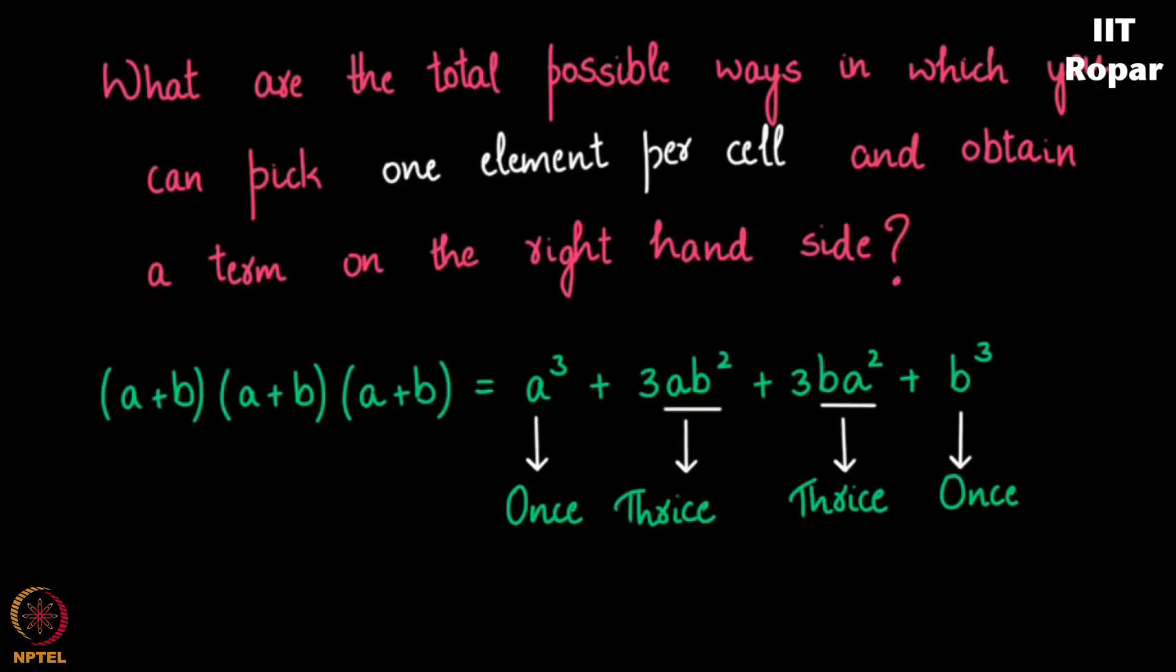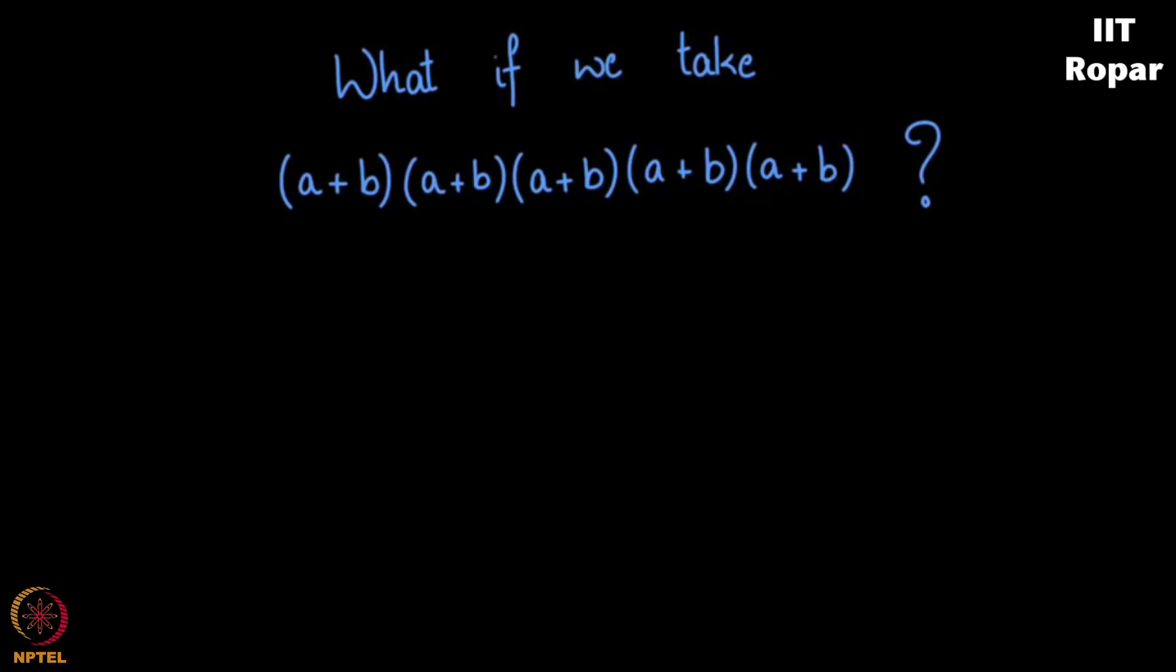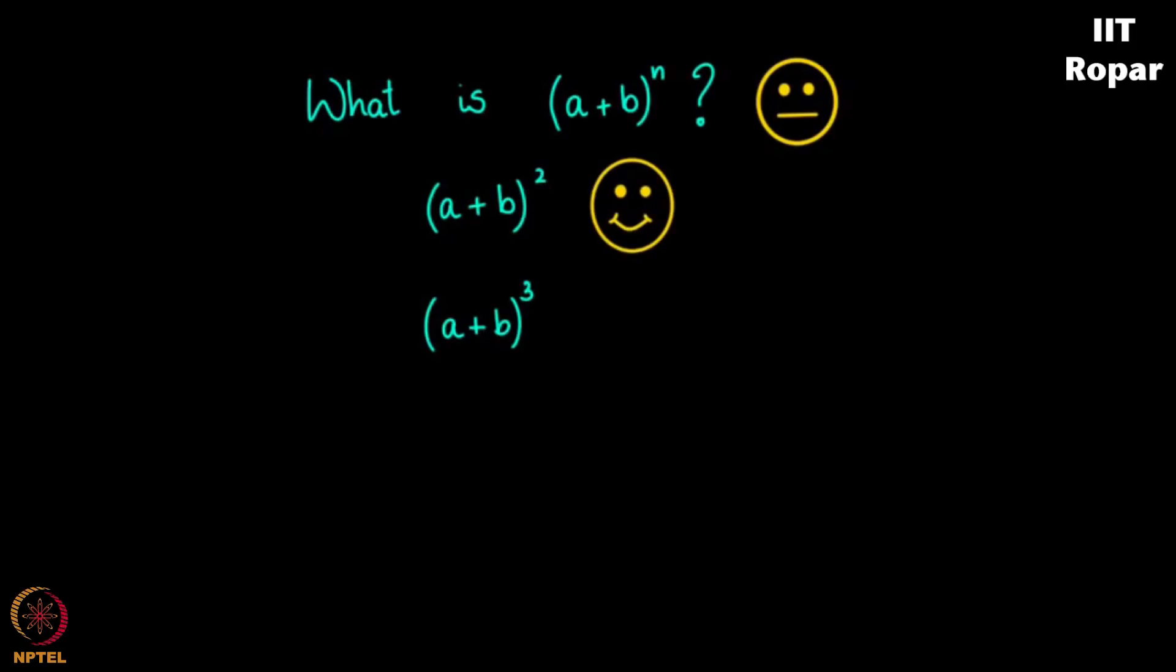Now let us go forward and try to see what happens if we were to take a plus b five times. What would happen? Think about it. If I were to ask this question, what is a plus b whole to the n, it is slightly confusing. You see, a plus b whole square was very easy. A plus b whole to the cube was also very easy. A plus b whole to the five, you also observed what is happening there. But in general, what is the answer for n?